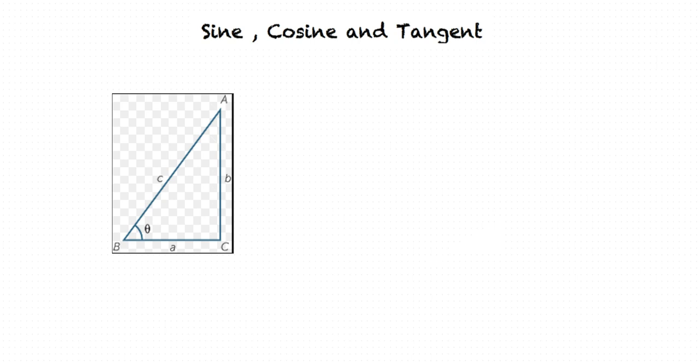Here is the right-angled triangle ABC. Let us first define all the sides for angle theta. AC is called the opposite side of angle theta. Similarly, BC is called the adjacent side of angle theta, and AB is called the hypotenuse of the right-angled triangle ABC. Let us define sine theta, cos theta, and tan theta in triangle ABC.